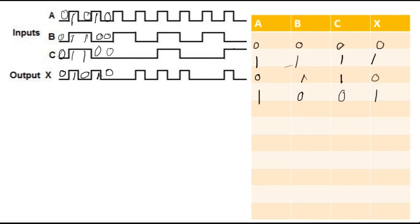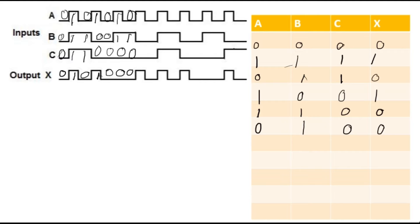Since 0,0,0→0 was already in our first entry, no need to rewrite it. Next is 1,1,0 — a new combination — so write it: A=1, B=1, C=0, and output is 0. Then 0,1,0 is giving you 0, so write: A=0, B=1, C=0, X=0. Next clock is 1,0,0 — already done, output 1 — so just verify it, no need to rewrite.